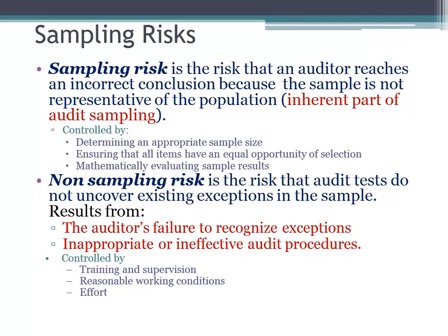That's what we call non-sampling risk. How do we address it? Through training and supervision. Think about the first standard of field work — auditors have to be trained, knowledgeable about the areas they're auditing, and properly supervised. That's GAAS. Reasonable working conditions and effort matter. A big part of it is the auditor being knowledgeable, recognizing when they don't know something so they ask questions, and working in an environment that allows for that — with proper review and feedback so auditors are learning and putting forth the effort.